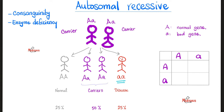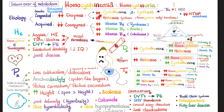Unlike Marfan syndrome, which is autosomal dominant, homocystinuria is autosomal recessive — think enzyme deficiency. The relevant enzyme deficiencies include cystathionine beta-synthase deficiency, methionine synthase deficiency, or methylene-THF reductase deficiency. The IQ is low, there are many thromboses, skin hypopigmentation with fair complexion, and a Marfanoid body habitus.